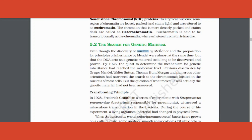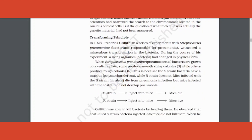First, you need to know that Miescher, the person who identified DNA as an acidic material, called it nuclein. Coming to the Griffith experiment — the one in which he said there is a transforming principle, otherwise called the genetic material — he just understood that there is something being transferred. He did not know whether it was DNA, protein, or anything else. Griffith took a bacteria called Streptococcus pneumoniae.